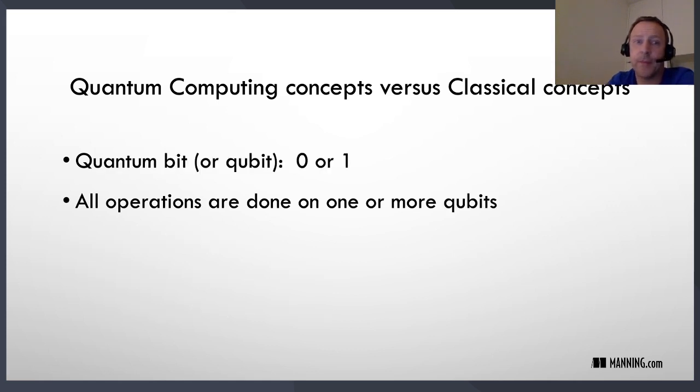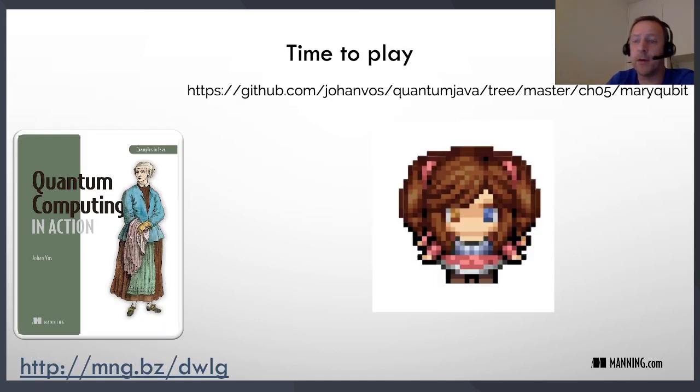In quantum computing we have also bits, but we call them qubits - they're sort of the equivalent of quantum bits. Similar to classical computing, the operations in quantum computing are done on one or more qubits. Before we go into more detail about what a qubit is, let's have a look at a game in Java.